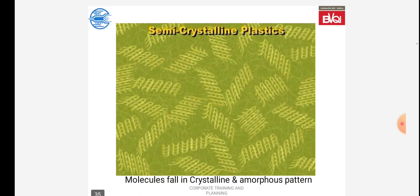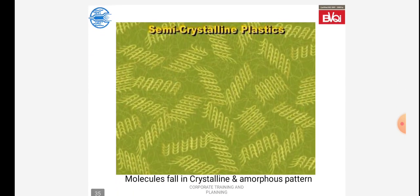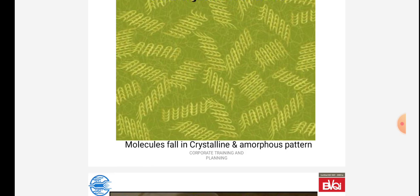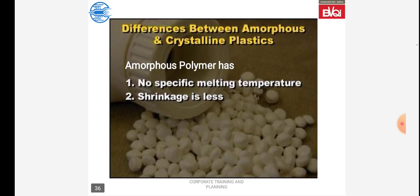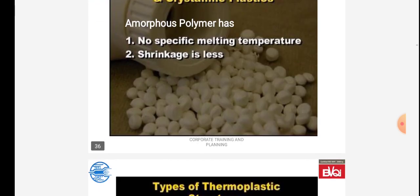Semi-crystalline plastics have molecules that fall in both the crystalline and amorphous pattern. Differences between amorphous and crystalline plastics: amorphous polymers have the following properties — no specific melting temperature, and shrinkage is less.